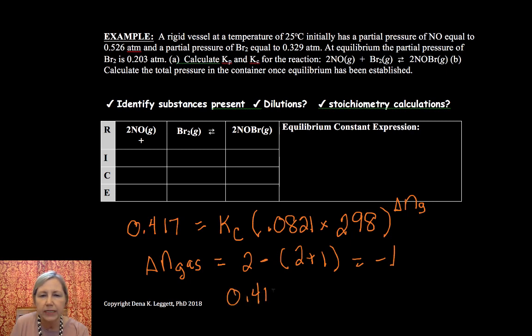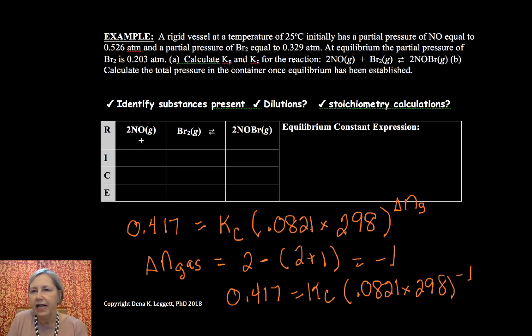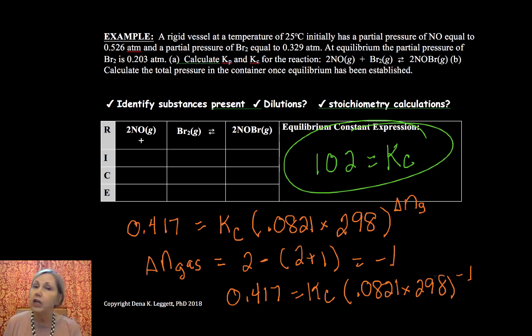So 0.417 is equal to KC times 0.0821 times 298 to the minus 1. And if I've done my algebra right, and you definitely want to double check that, that's part of learning from videos is to make sure you can follow this math. I have a KC value of 10.2. So very different values because we're doing different molarities in different amounts. So hope that was helpful. Thanks for joining me. Take care.